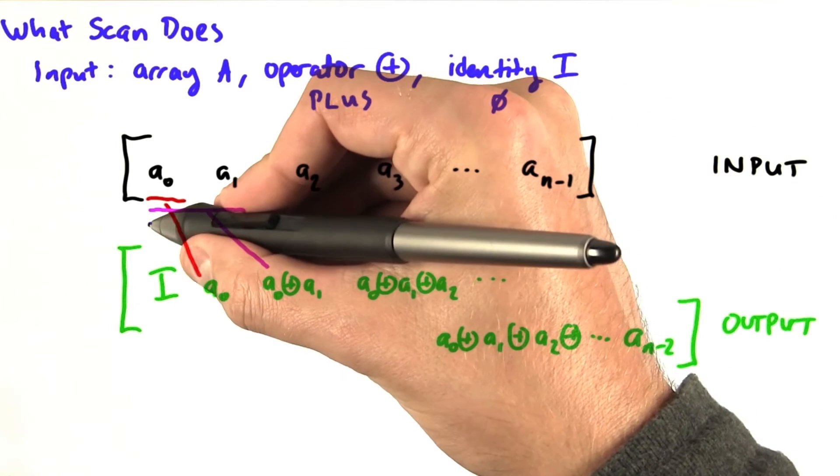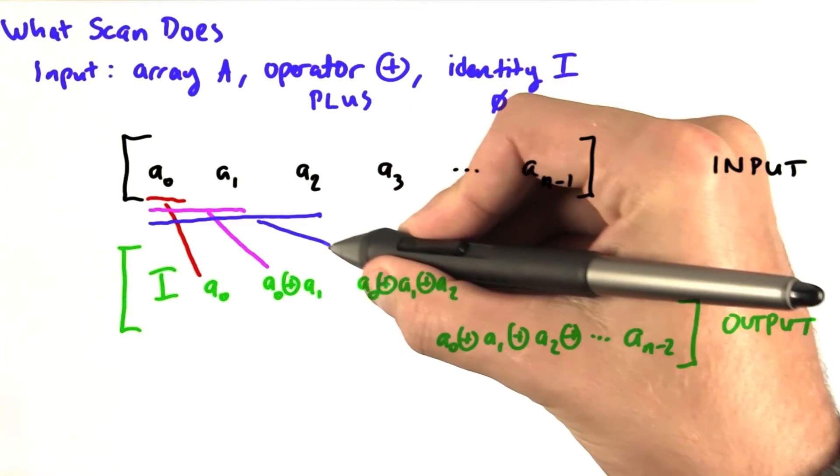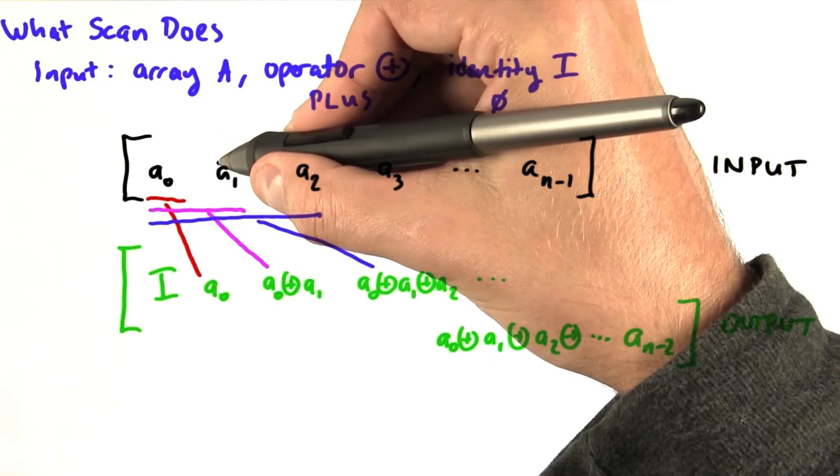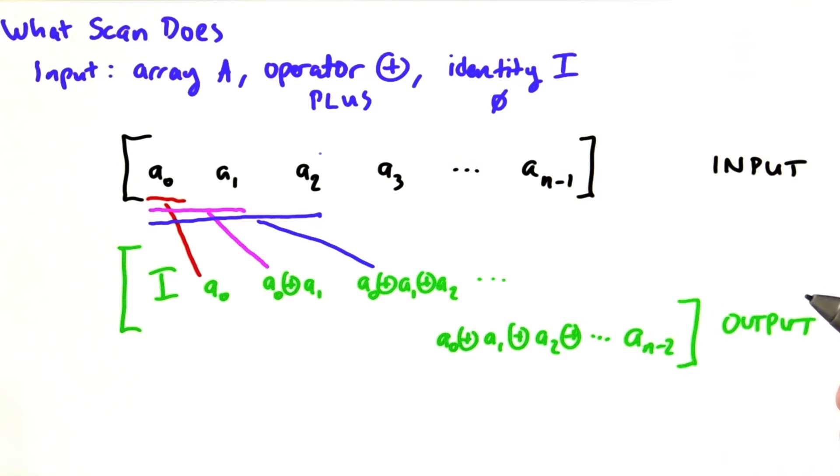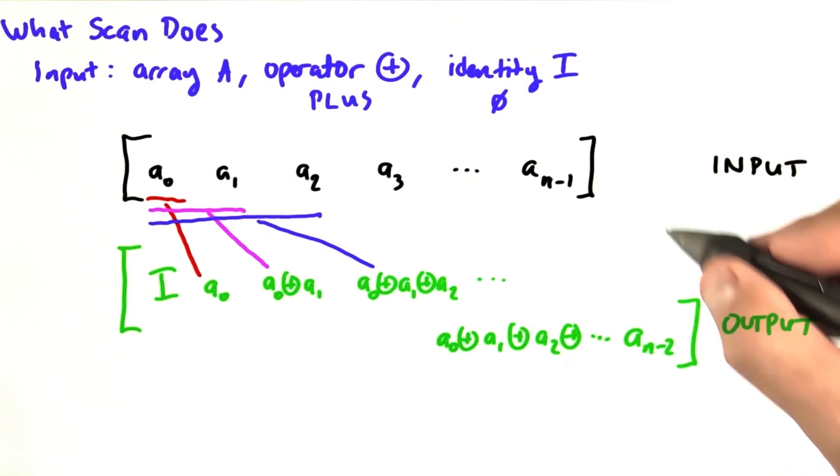The output for the fourth element is simply the sum of all the elements that come before it. In this case, the sum of a0, a1, and a2, and so on. And so finally you reach the final element, and it is the sum of everything in the array except for the very last value.